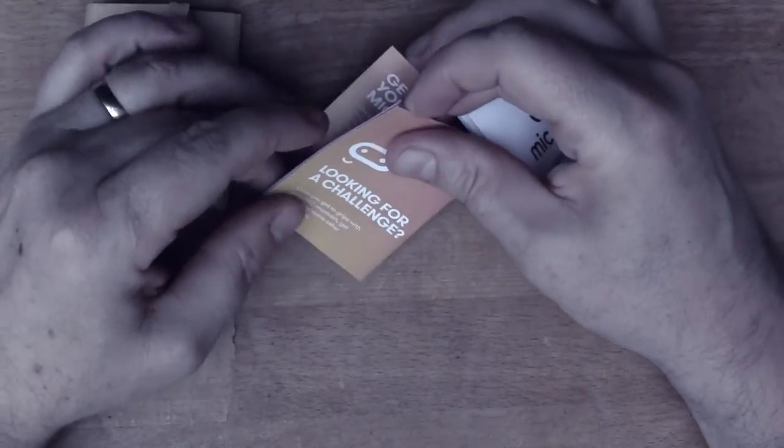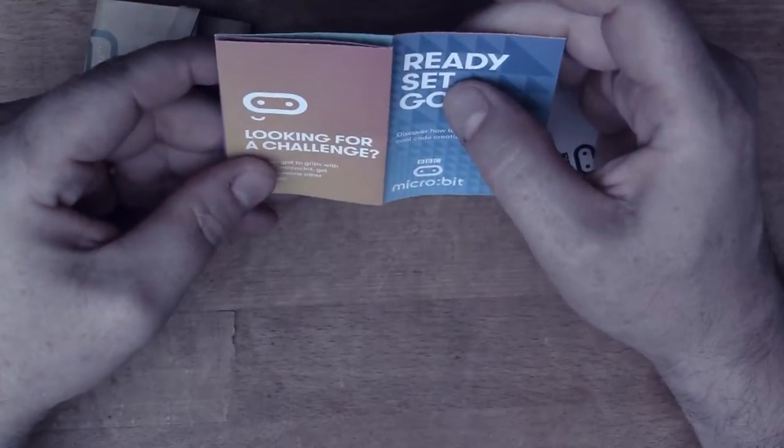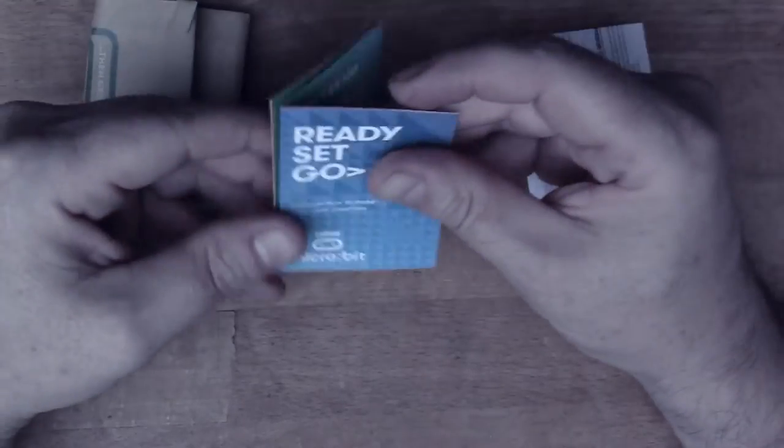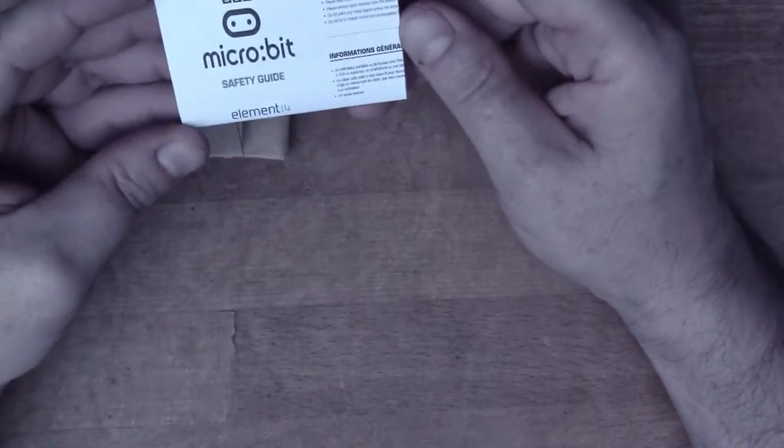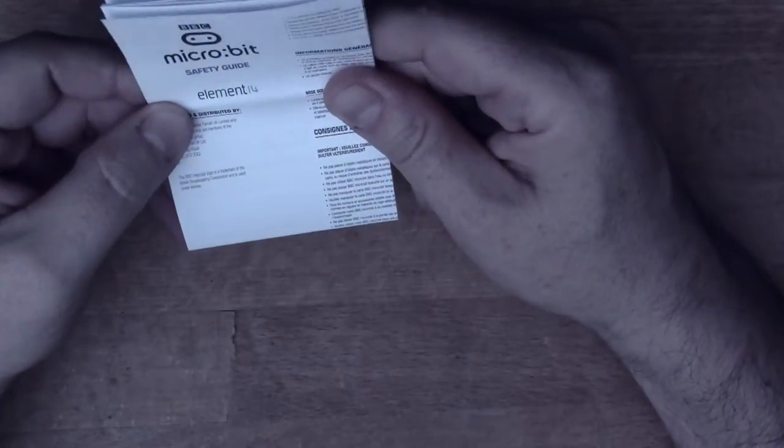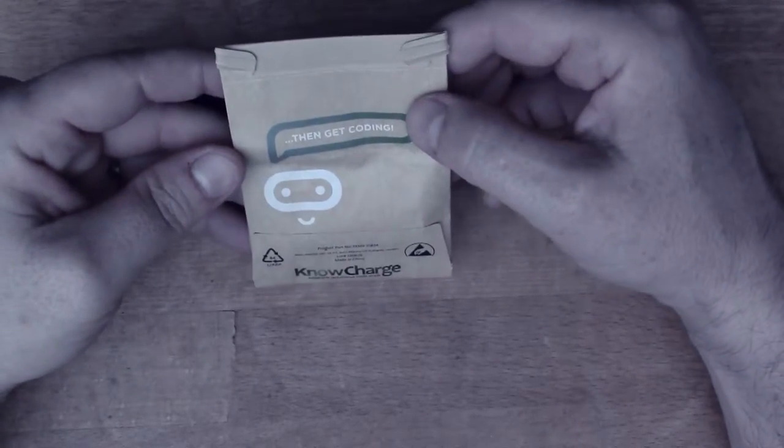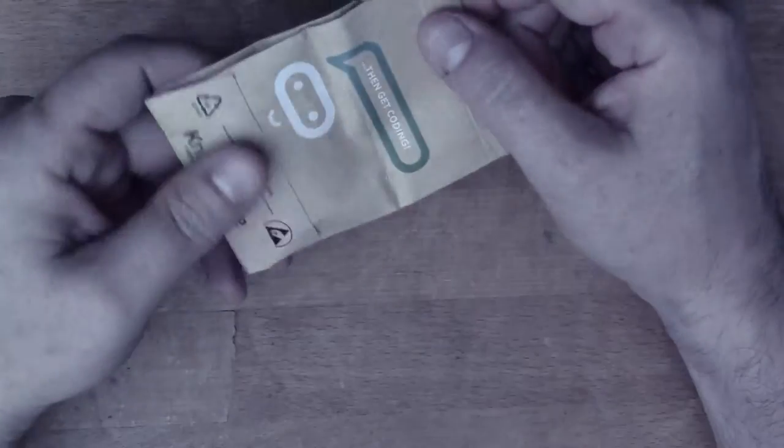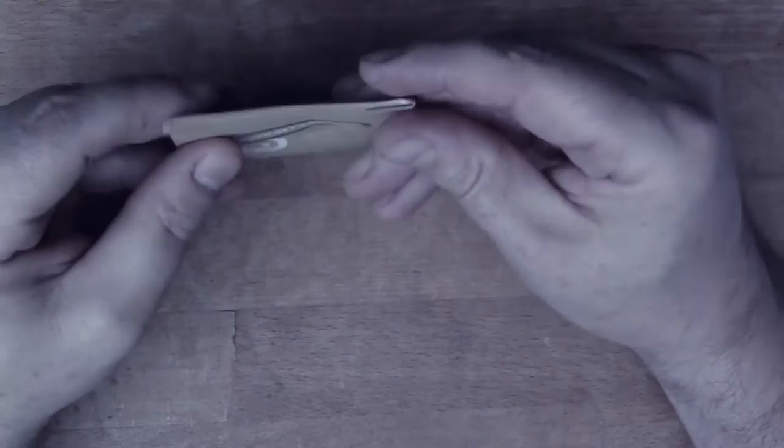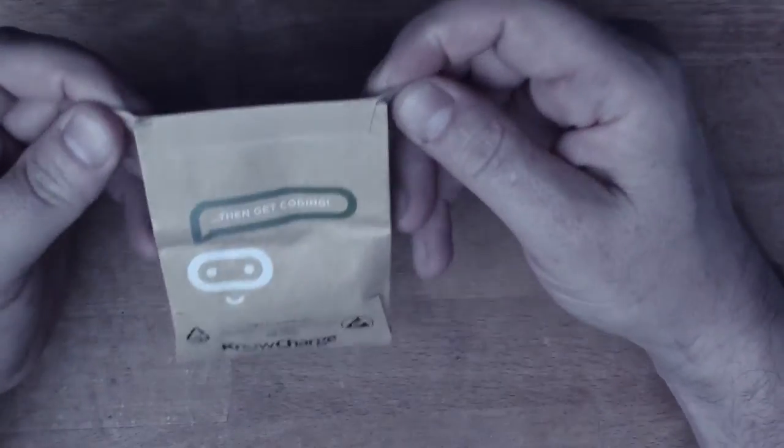So basically we've got a small instruction leaflet, we have a safety guide, and this tiny brown paper package which contains the micro:bit.